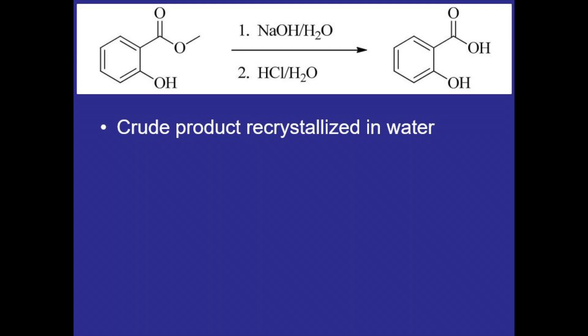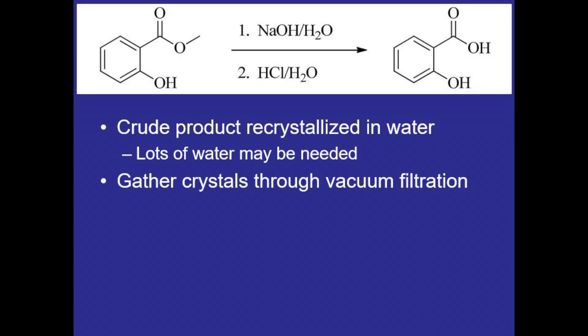The crude product can be gathered through vacuum filtration and recrystallized in water. It's not incredibly soluble in water, so we'll have to use a lot more water than usual — more than 10 milliliters — so we'll do it in a beaker instead of a Craig tube or a test tube. Those pure crystals can then be gathered through vacuum filtration, and we'll want them thoroughly dry before moving on to the second reaction, so we'll leave it on the Hirsch funnel for quite a while or put the product in the oven.